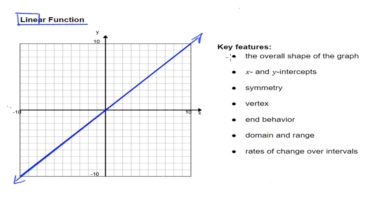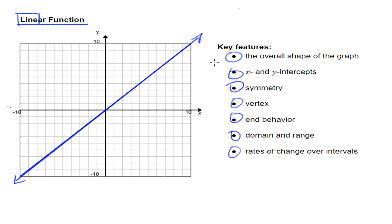In all of these videos we are going to be looking over seven main parts: the overall shape of the graph, the x and y intercepts, symmetry, vertex, end behavior, domain and range, and rates of change over intervals. If you need to jump to one of these, I will put links in the description to all the different topics we're going to be talking about during our linear function video.